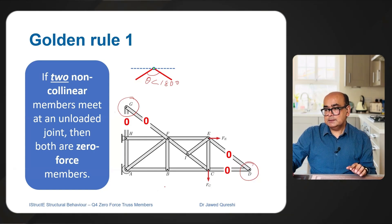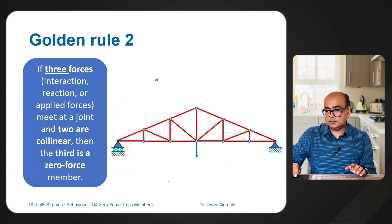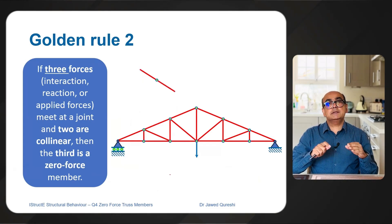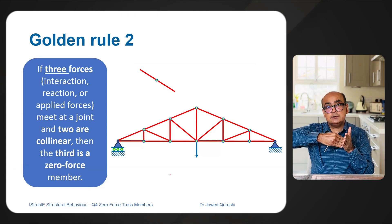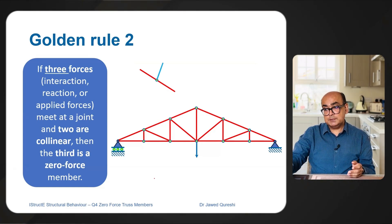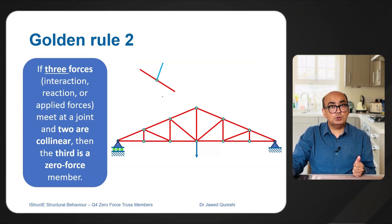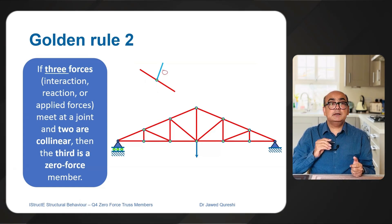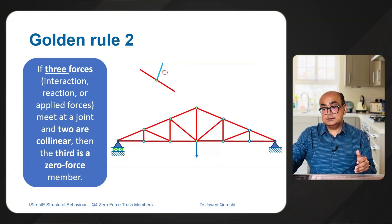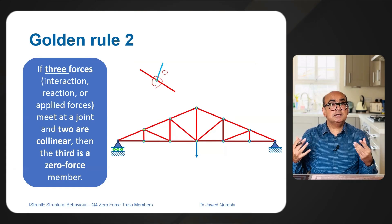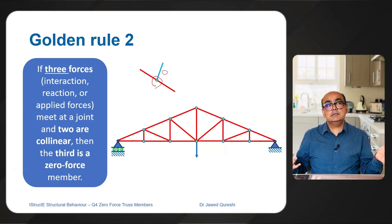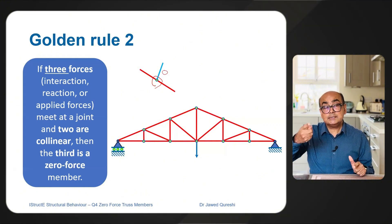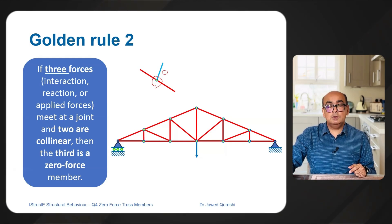That is the first rule. The next — and most important — rule is this: when you have three forces where two members are collinear in the same direction and a third member is entering the joint, it will be very difficult to balance that force because it will have a vertical component. The collinear members have only a horizontal component, so that third member has to be zero, otherwise there will be acceleration of the joint, causing instability in the structure.